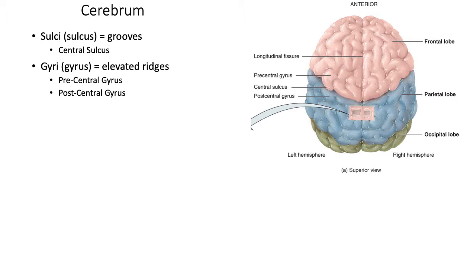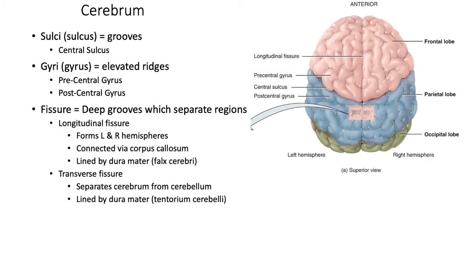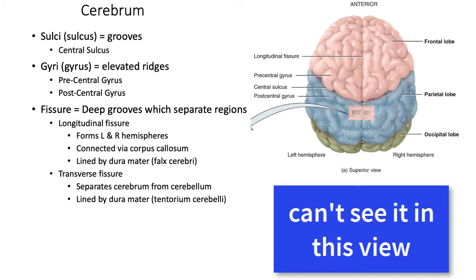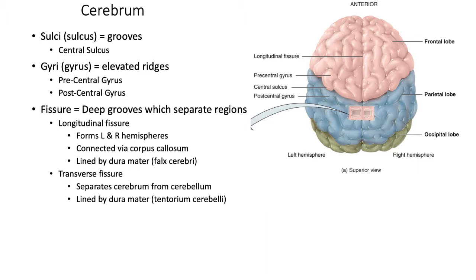The ridges are called gyri, and the most prominent gyri are the precentral and postcentral gyri, also known as the primary motor cortex and the somatosensory cortex. The Cerebrum also contains two fissures, deeper clefts that separate areas of the brain. The longitudinal fissure separates the left and the right hemisphere. The transverse fissure separates the Cerebrum from the Cerebellum. These fissures are lined by the dura mater.